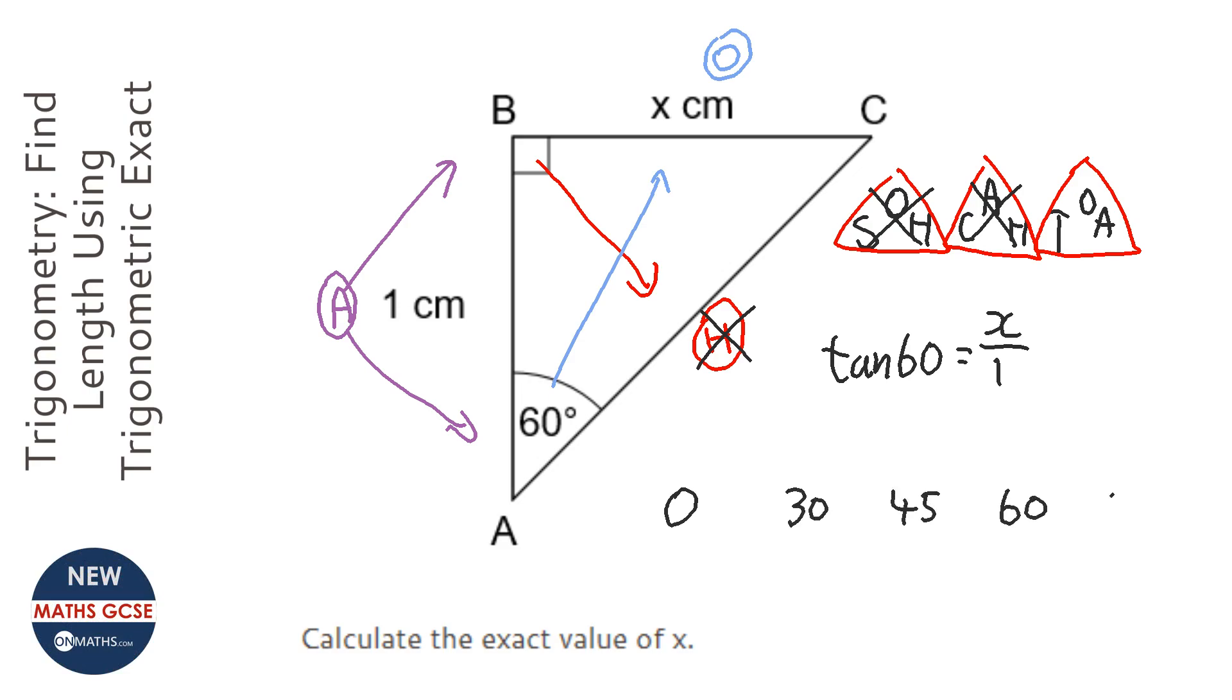And the idea here is to work out the exact values of tan 30, tan 45, tan 60. You circle the one you're trying to find. Well, here we're looking for tan 60.